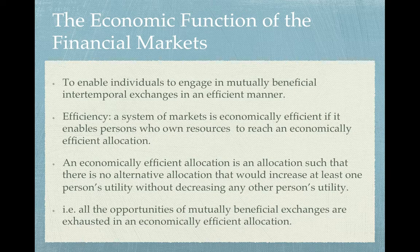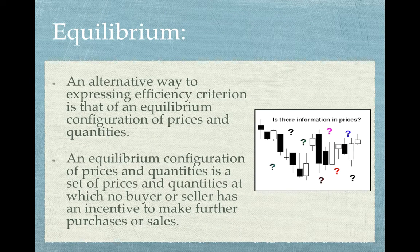This means we cannot find any other way of changing the beneficial exchanges such that we could increase at least one person's utility without decreasing any other person's utility. In welfare economics this is known as the Pareto efficiency criterion. The Pareto efficiency criterion can be difficult to implement as it requires interpersonal comparison of utility, and given that utility is an ordinal concept, we would have to look at efficiency from an alternative point of view.